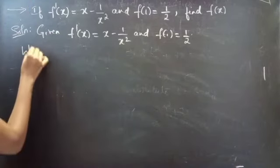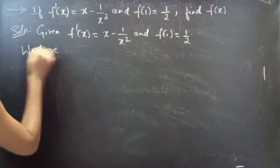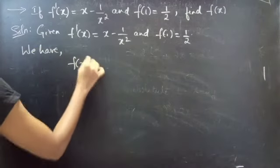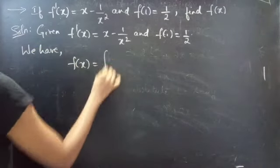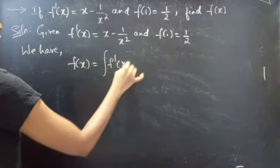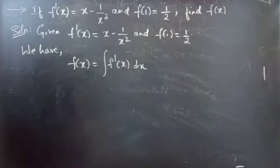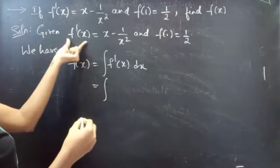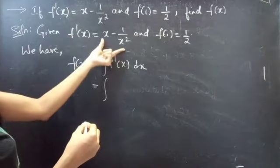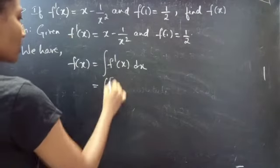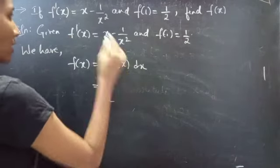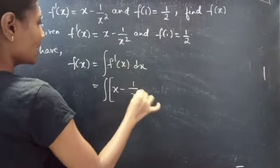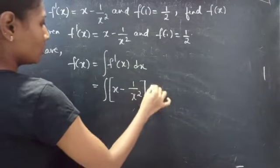We have the formula f(x) equals the integral of f'(x) dx. From the question, f'(x) equals x minus 1 by x squared, so we substitute that into the integral dx.